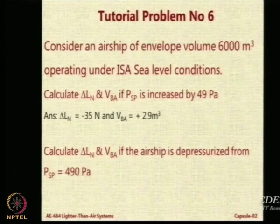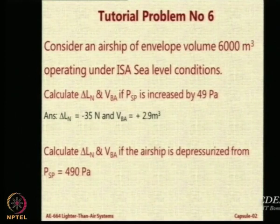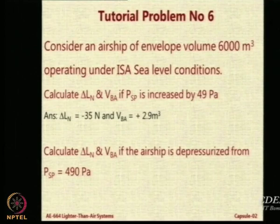Now let us go to a situation when you are depressurizing the airship. You assume that the PSP is 490 and suddenly it becomes 0 — that means you brought it down to atmospheric pressure, so there is a reduction of 490. You take delta PSP as minus 490. If it was plus 49 the answer was minus 35 and 2.9; if it is minus 490 it will simply be 350 and 29.